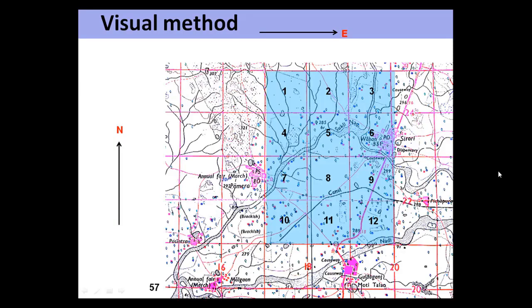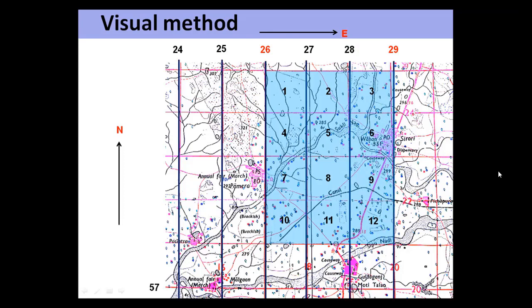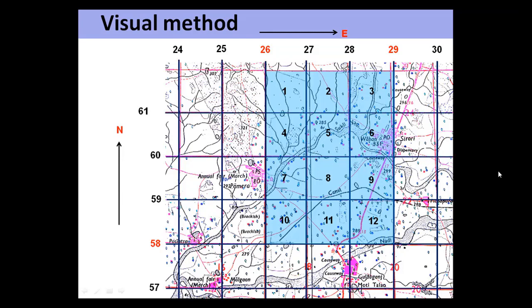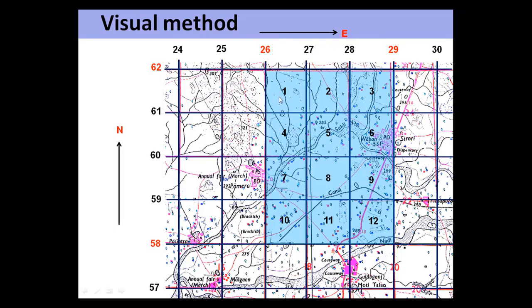Based on this method, one can easily calculate the area falling between certain grids. With the visual method, one can count the number of blocks falling between eastings and northings — this method is very easy, and after one or two practices, one can calculate the number of grids on a map extract. As per the question, from easting 26 to 29 and northing 58 to 62, the total number of blocks falling is 1 to 12 — so 12 blocks represent 12 square kilometers.